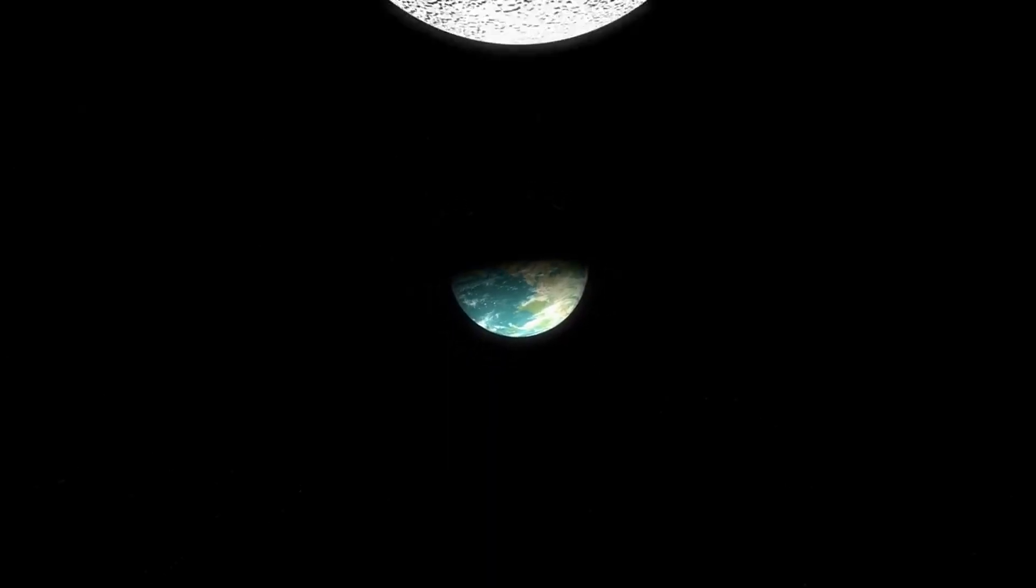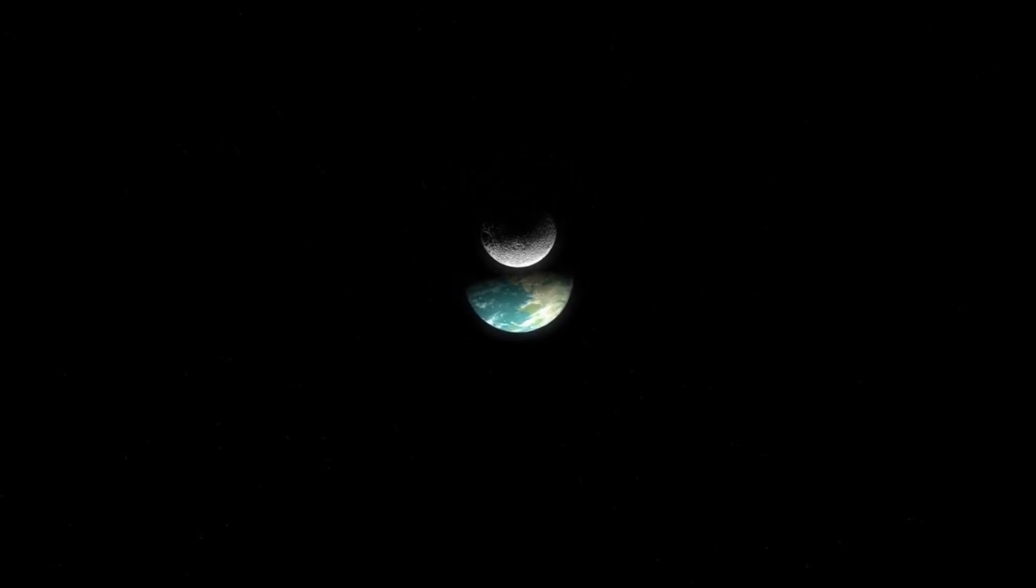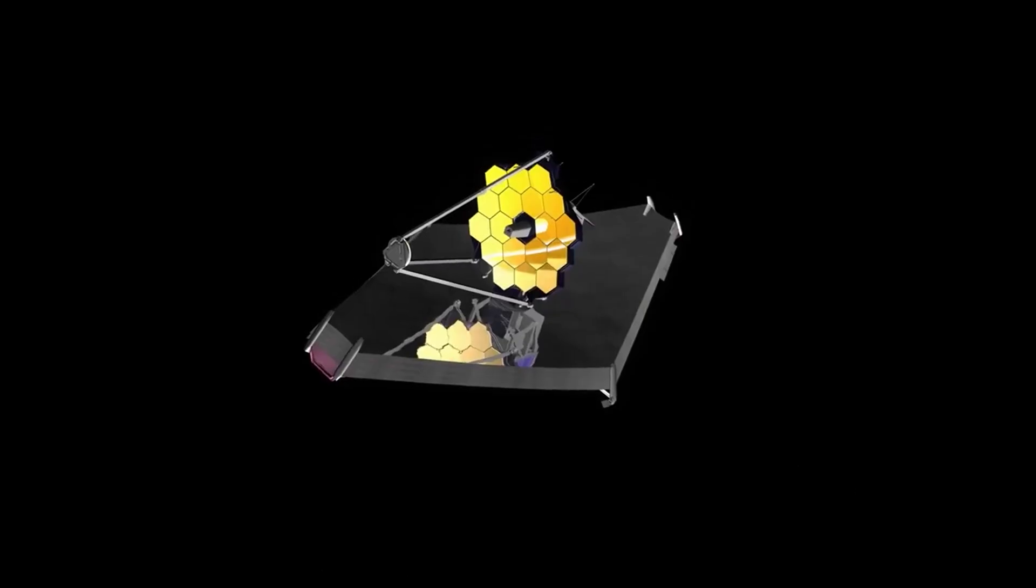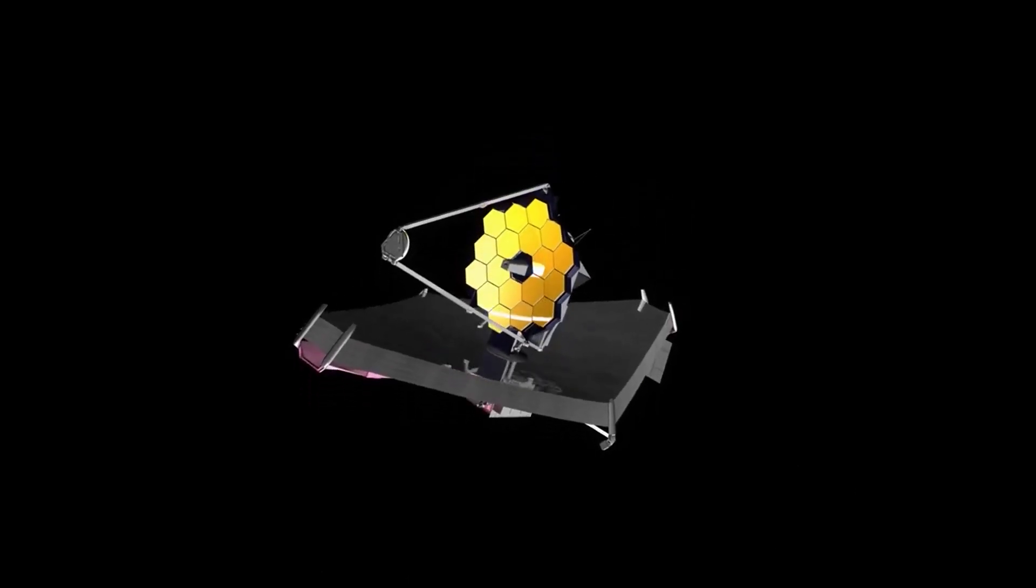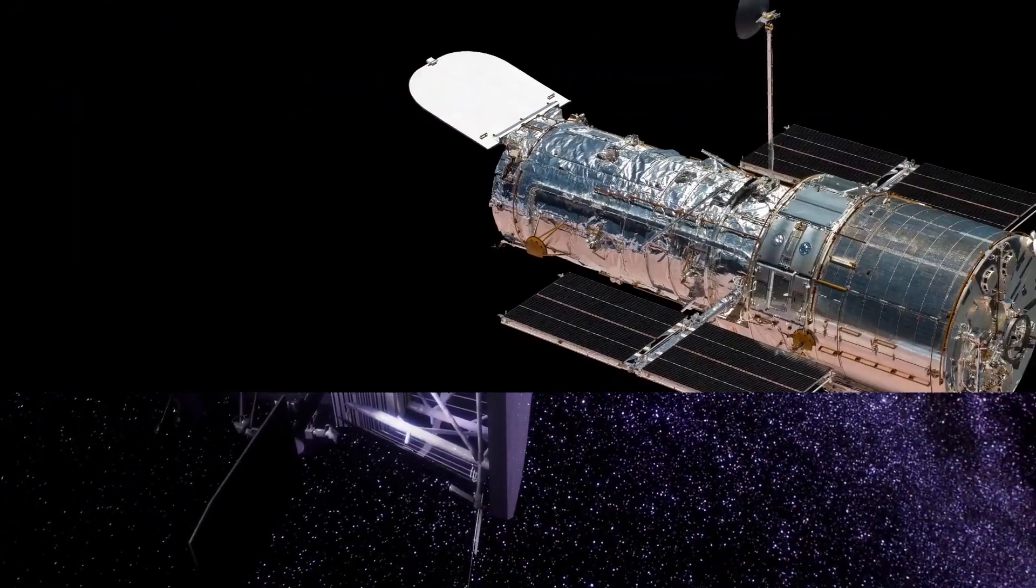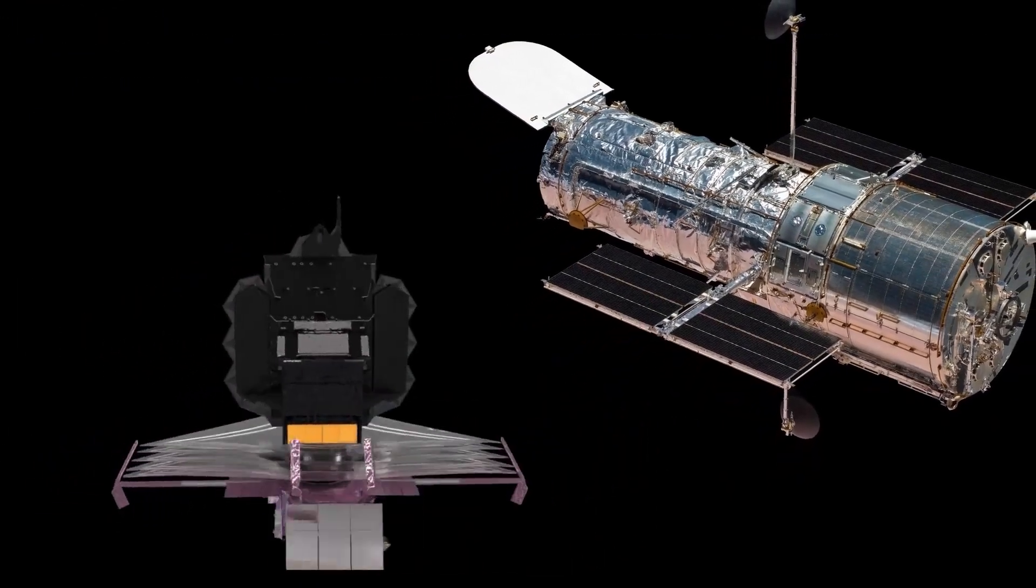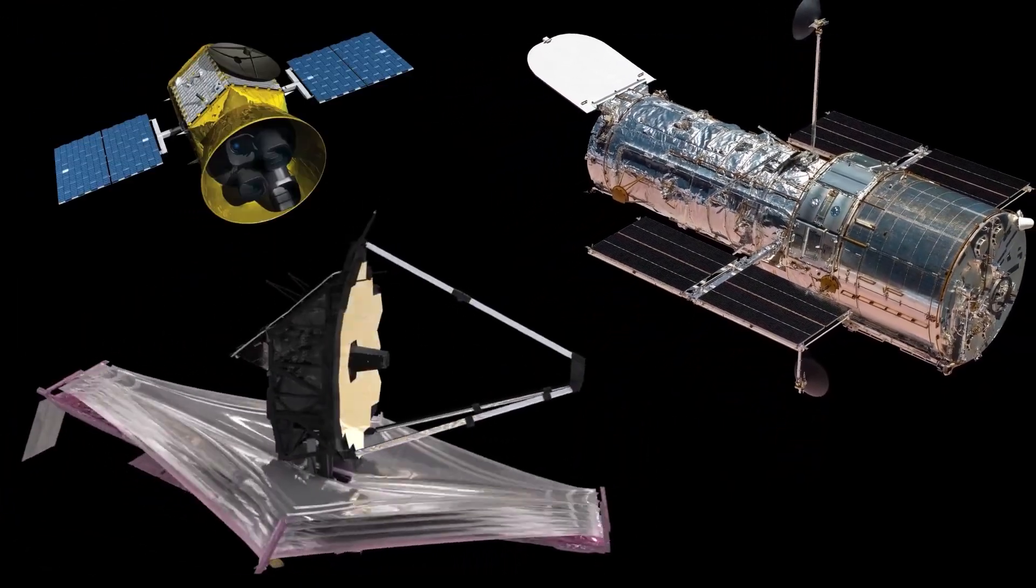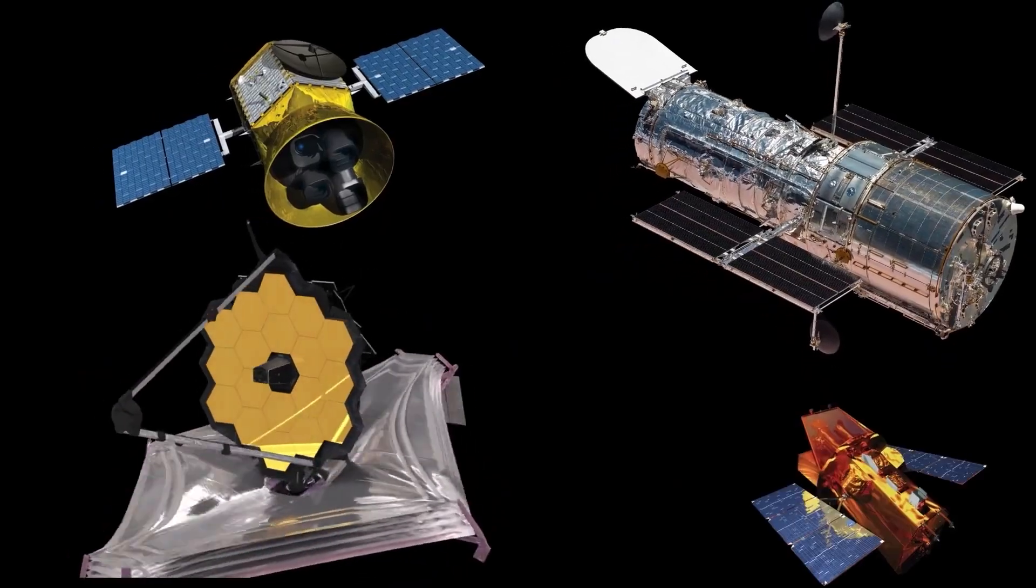Future observations with JWST Cycle 3. Spectroscopy, deeper fields, instruments like NIRSpec and MIRI, more measuring of emission lines, and gravitational lensing will help. Also, future telescopes like the extremely large ground-based telescopes will help refine these mysteries.